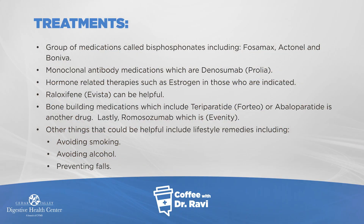The treatment for this includes groups of medications called Bisphosphonates such as Fosamax and Boniva. There are some monoclonal antibody medicines called Denosumab, which is Prolia. Hormone supplementation is indicated in some cases. Raloxifene is another group of medications. And lastly there are newer groups of medicines: Teriparatide, which is Forteo; Abaloparatide; and Romosozumab, which is Evenity. These are groups of drugs that have become available.